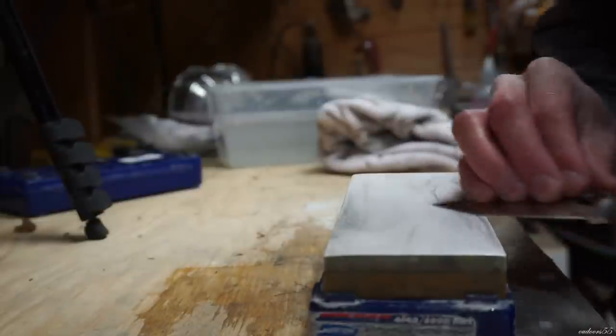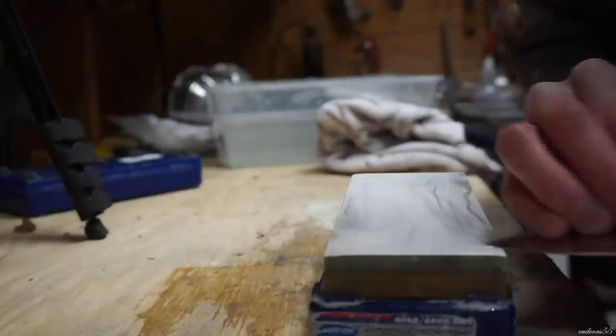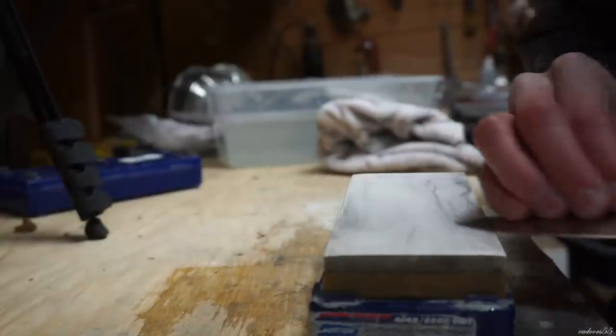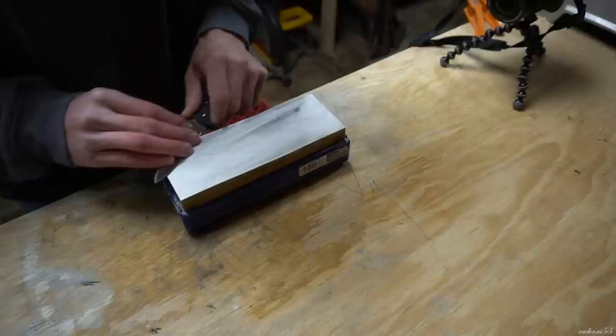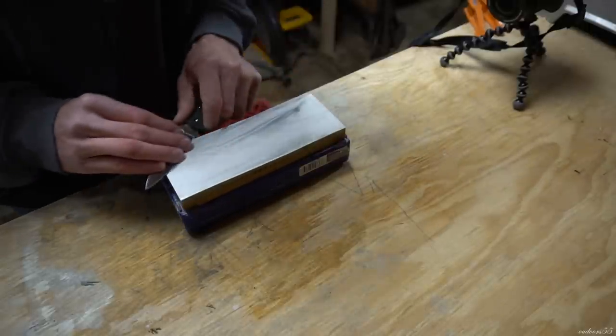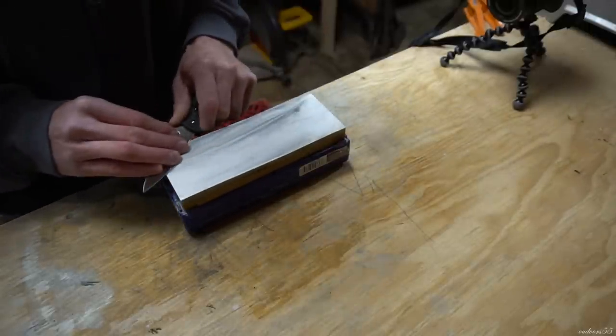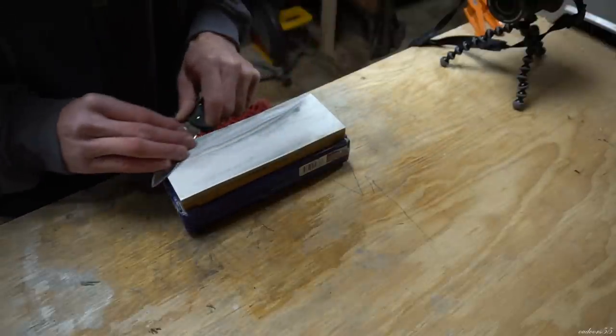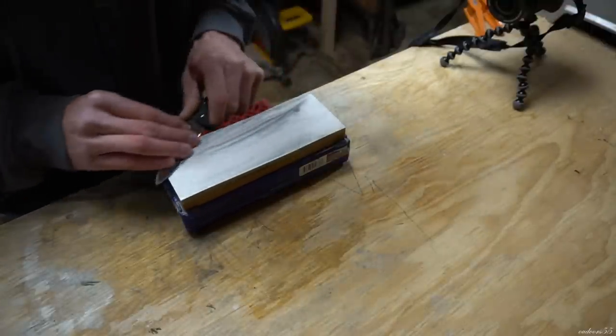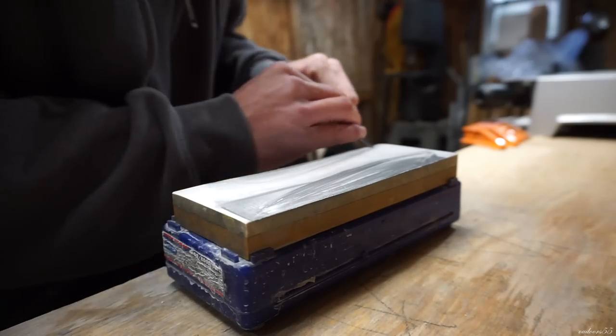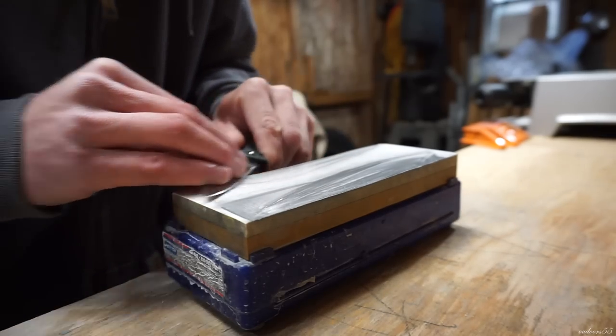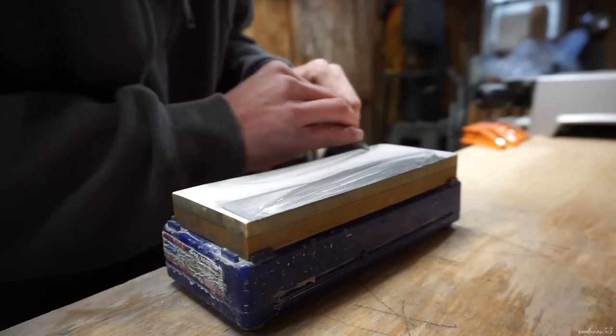Next I move on to the 4000 grit Norton stone. Now one thing I'd like to mention is that I think that the jump from 1000 grit to 4000 grit is a little bit much. It's nice to have a stone in between those two grits because once you start getting into a mirror polish you can still see some of those 1000 grit scratches remaining in the edge at least under some magnification. To the naked eye it just looks like a mirrored edge.